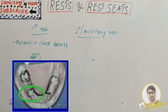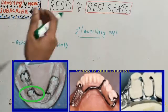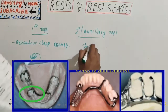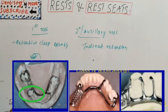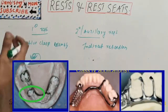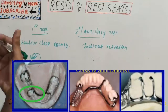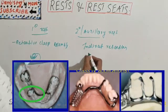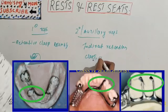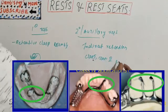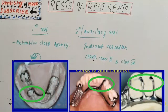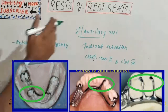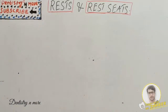An auxiliary or secondary rest is a rest responsible for additional support or indirect retention. It is used in extension RPDs such as Kennedy Class I, Class II, and Class IV long-span cases. In these extension RPDs, the secondary auxiliary rest is used.